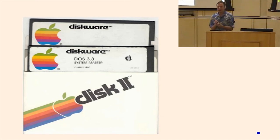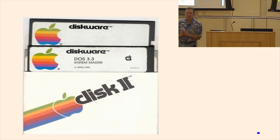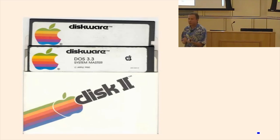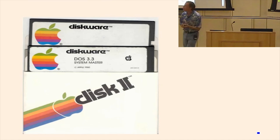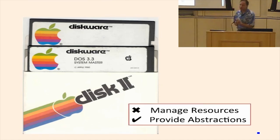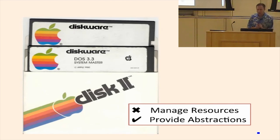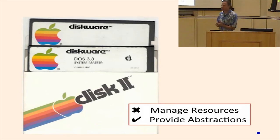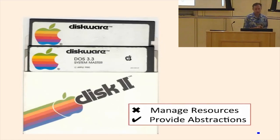How many programs can you run at once on this machine? Just one. It was really designed for one user running one program. So by our definition, it's not really an operating system. It provides abstractions, but it doesn't do anything to really manage resources. Every program that runs owns the whole machine and can do whatever it wants — there's no management of resources.